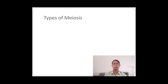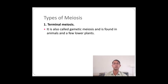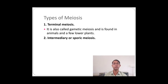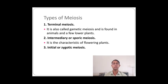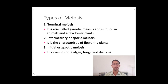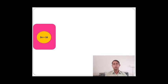There are different types of meiosis which we discussed in an earlier lecture. The first is called terminal meiosis — the meiosis which takes place in earlier phases. It is also called gametic meiosis and is found in animals and a few lower plants. The second is known as intermediary or sporic meiosis, which takes place in the majority of flowering plants. Then there is initial or zygotic meiosis, which takes place in algae, fungi, and diatoms — that is, lower plants.